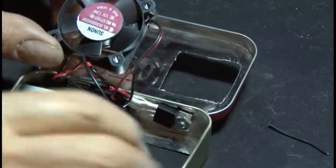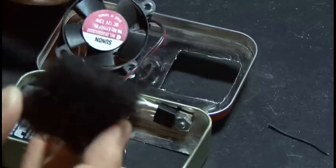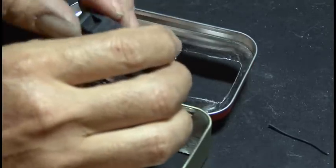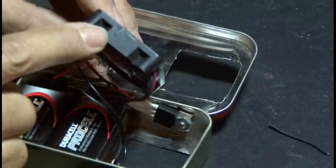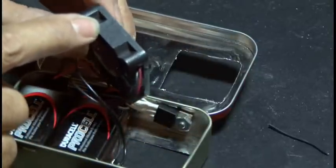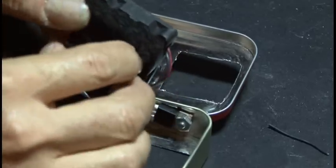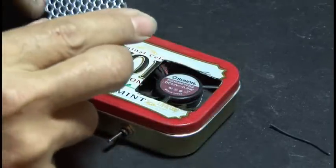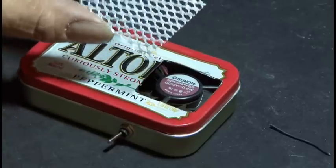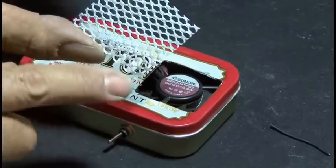The next thing is to add our carbon filter. And it's important to pay attention to the arrow that's on the fan as far as the direction of airflow, because you want the carbon filter to suck the smoke through the fan and out the other side.